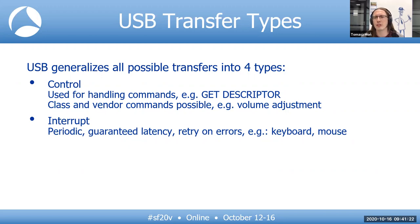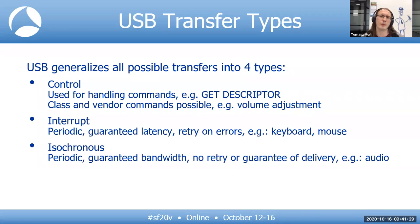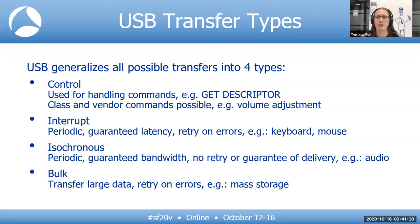The host will periodically poll the device for interrupt data often enough to meet the latency requirement, and failed polls will be retried. Example use cases for interrupt transfer are human interface devices like keyboards or mice. Isochronous transfers are good for streaming audio or video — they are periodic with guaranteed bandwidth, but there isn't any retry or guarantee of delivery. For transferring large data, bulk transfer should be used. The catch is there's no guarantee about latency or bandwidth, but for many applications that doesn't matter. Example use cases for bulk transfer are mass storage or print data.